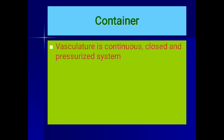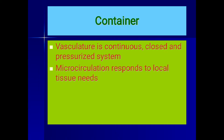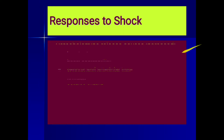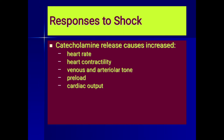The vasculature is a continuous closed pressurized system. Microcirculation depends on local tissue needs, and blood flow is dependent on peripheral vascular resistance. The responses to shock include catecholamine release causing increased heart rate, heart contractility, venous and arteriolar tone, and preload — all working to maintain cardiac output.